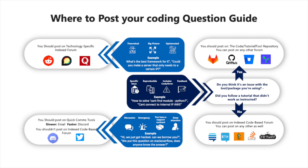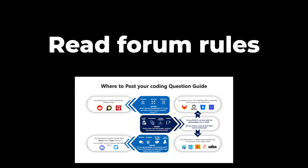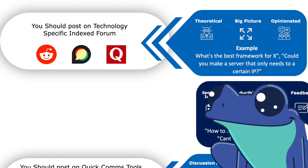However, some questions are better fit for DMs, Twitter, or Discord that aren't indexed. We made a little chart here to figure out where is the best place to post your questions. Feel free to pause the video to take a look, or read our blog in the descriptions. Before actually posting to any one of these forums, be sure to read their rules. Basically, the breakdown looks like this: theoretical, big picture, or opinionated questions can go great on general Q&A forums like Quora.